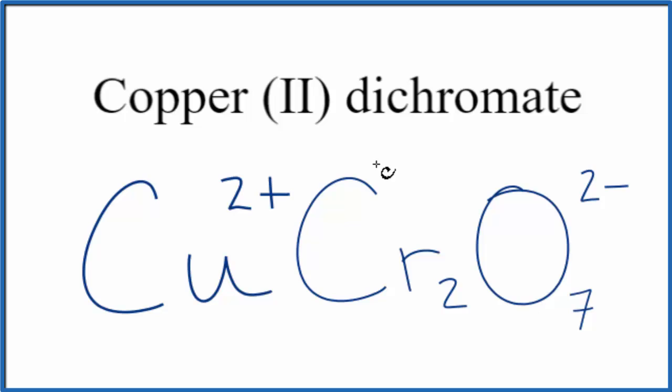So 2+, 2-, and this 2- here goes for the whole dichromate ion. 2+ and 2-, that adds up to zero. Net charge is zero. So this is the formula for copper 2 dichromate.